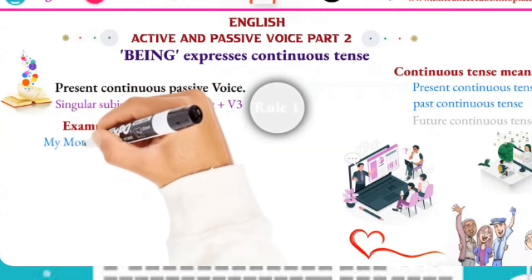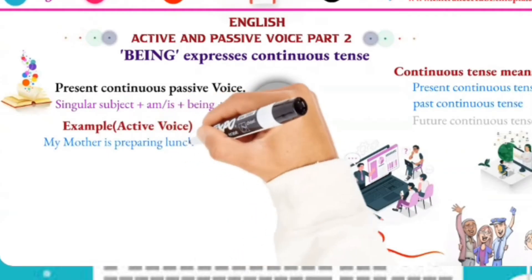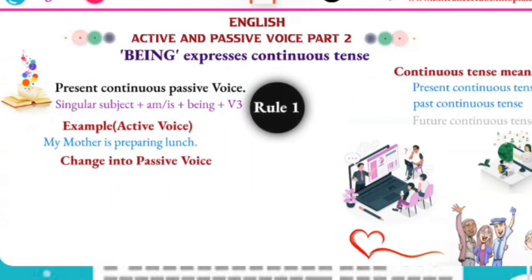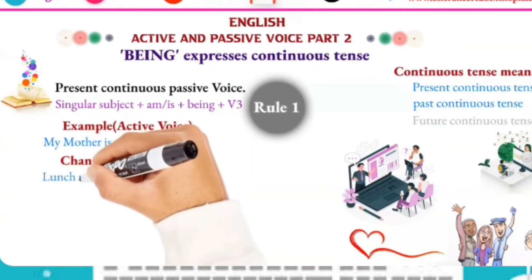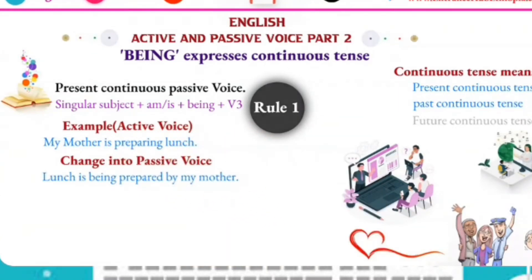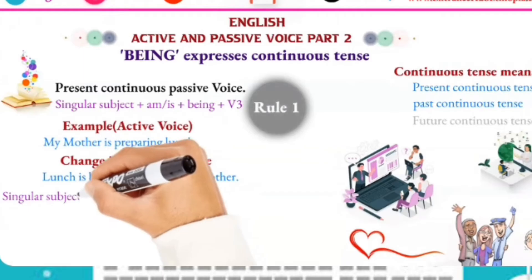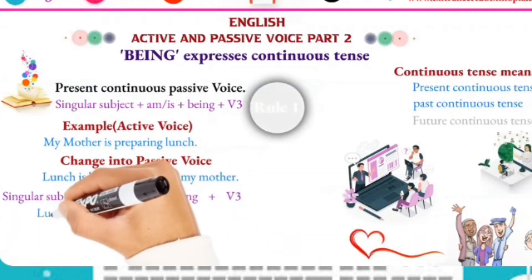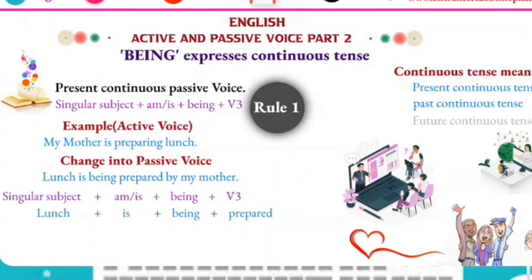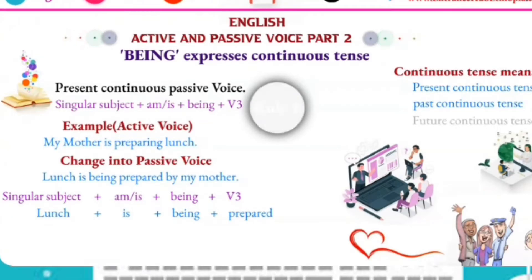For example: 'My mother is preparing lunch' — this is the active form. The passive form is: 'Lunch is being prepared by my mother.' So the singular subject 'lunch' takes 'is', then 'being', then the past participle 'prepared', followed by 'by my mother.'